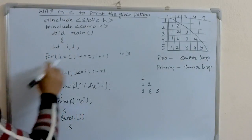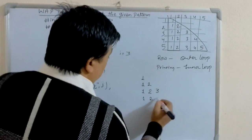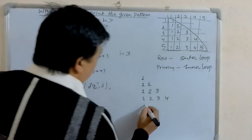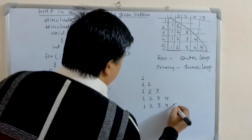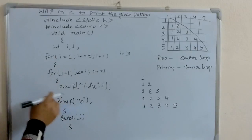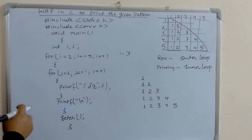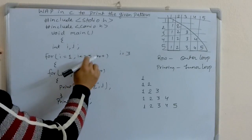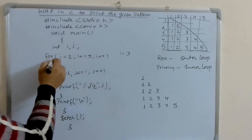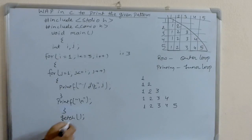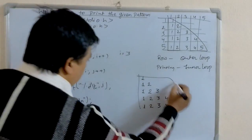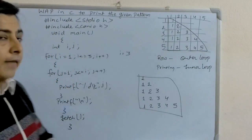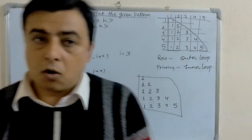Similarly, in the 4th row it prints 1, 2, 3, and 4. In the 5th row it prints 1, 2, 3, 4, 5. After that, the value of i increases to 6. 6 less than or equal to 5 is false, so it comes out of the outer loop and prints this pattern. We get the answer and we print this pattern. Thanks for watching.